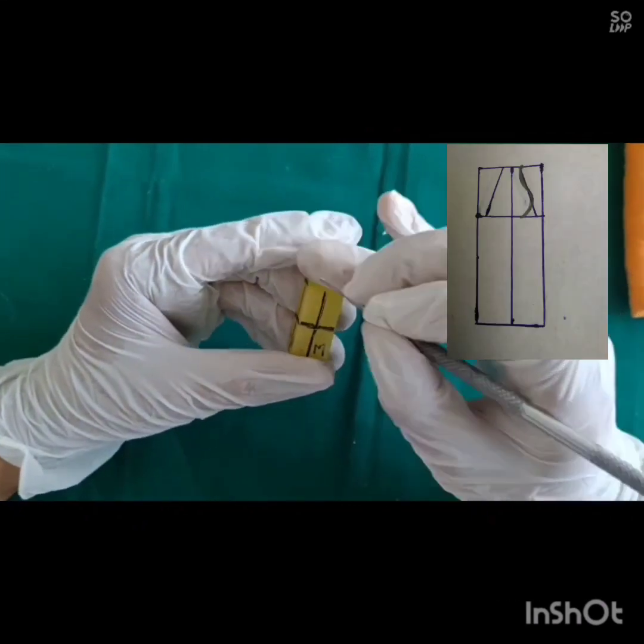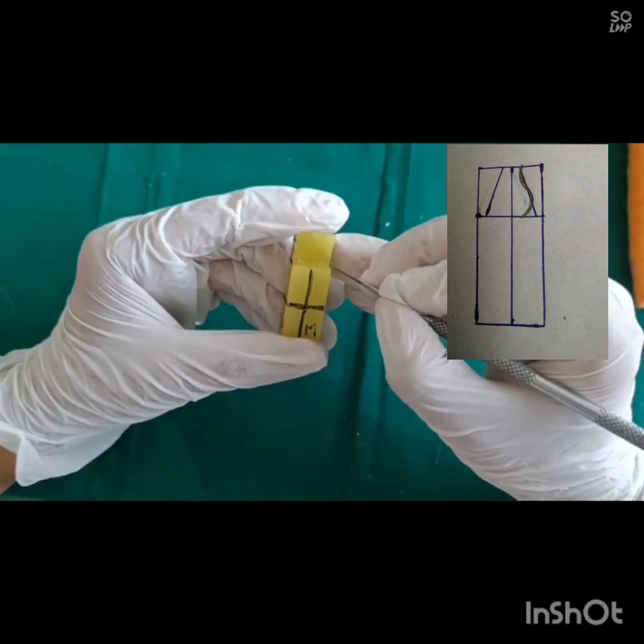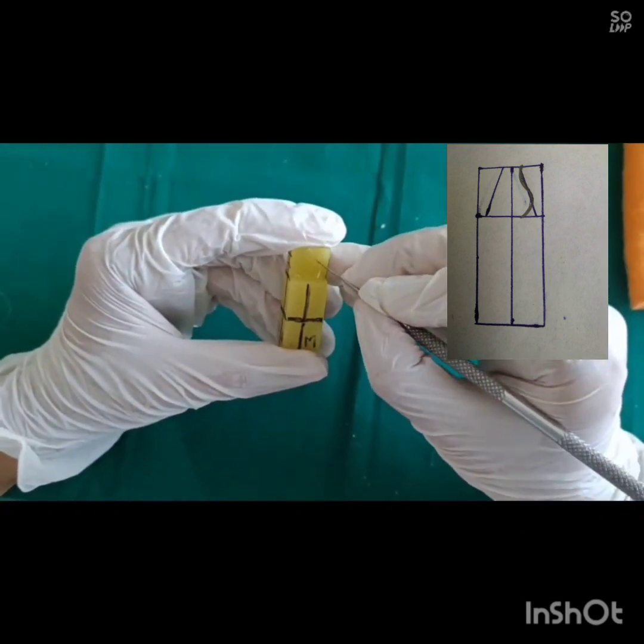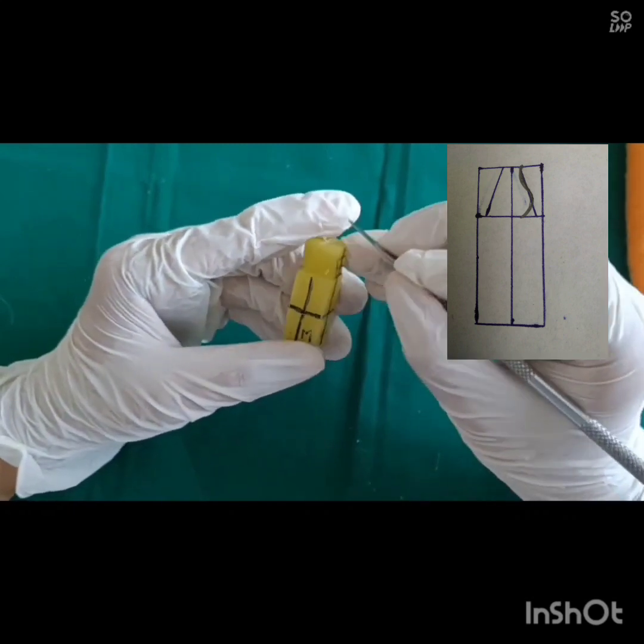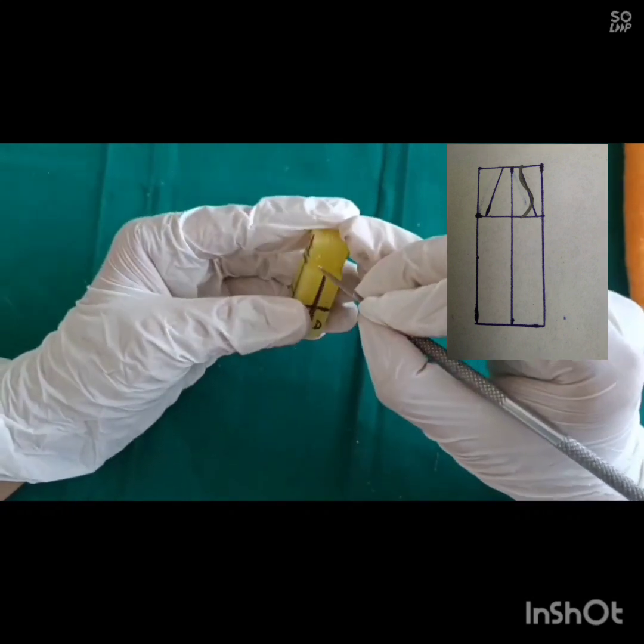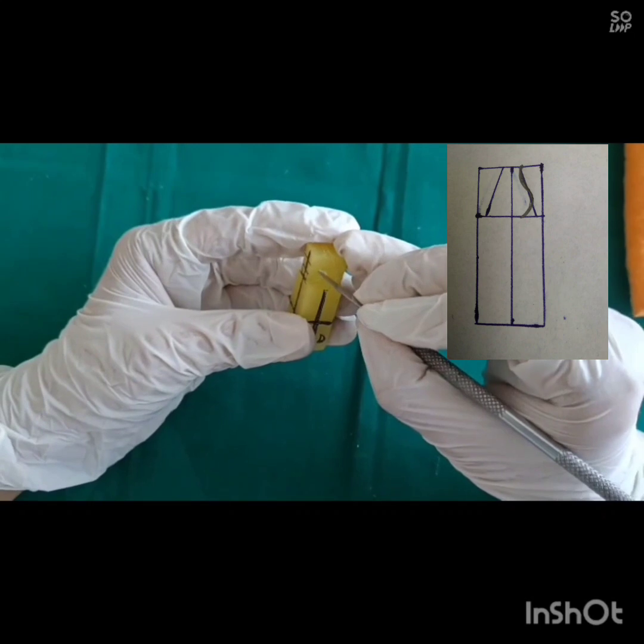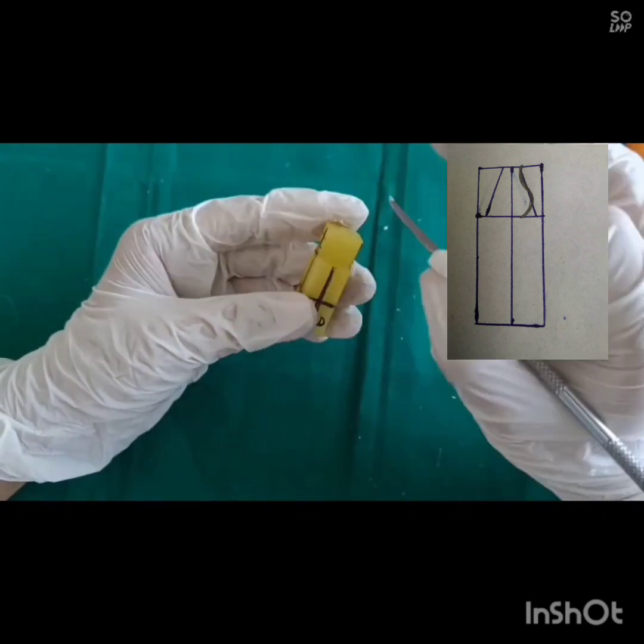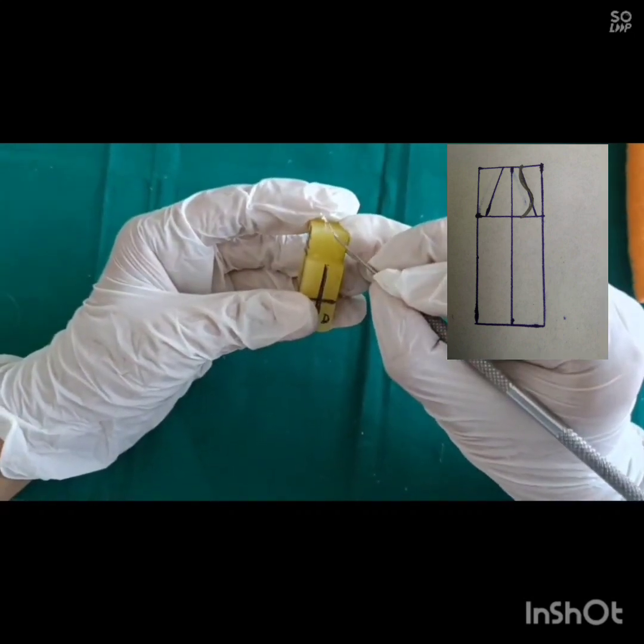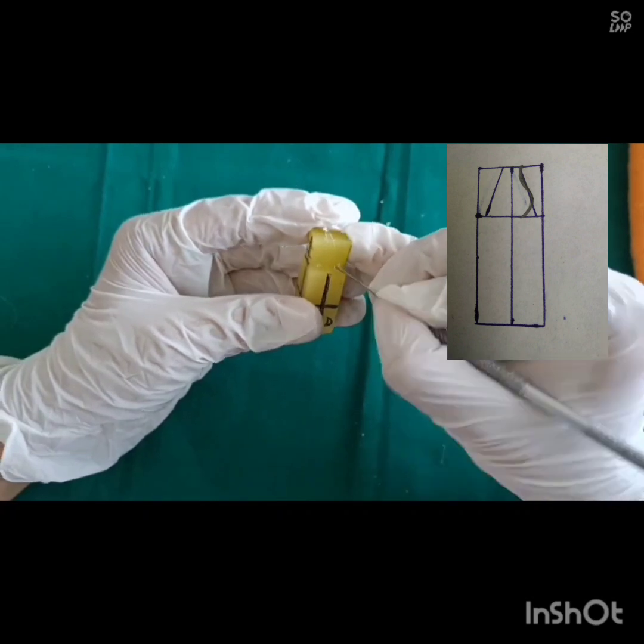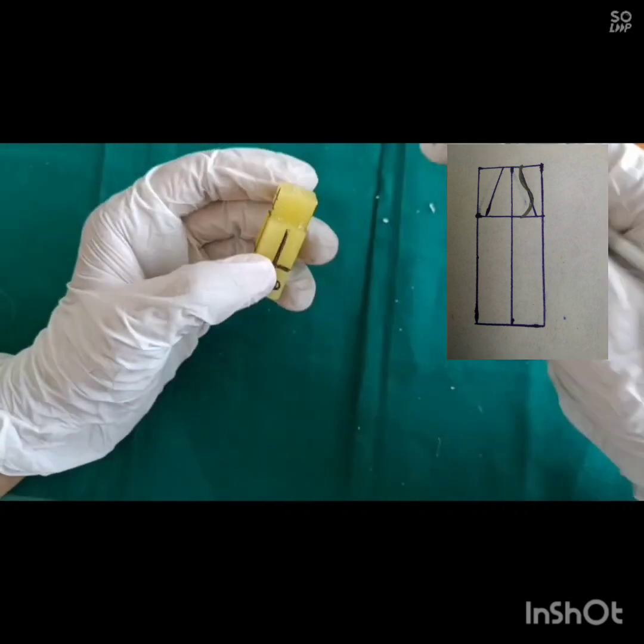In lingual surface, we have cingulum and fossa. Cingulum is elevated and fossa is depressed. To create lingual fossa on lingual side, we have to slightly modify this lingual outline. Draw the curvature on both mesial and distal surfaces. It will be helpful while you are carving.